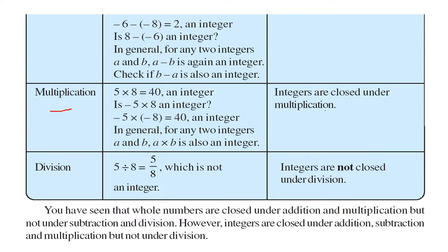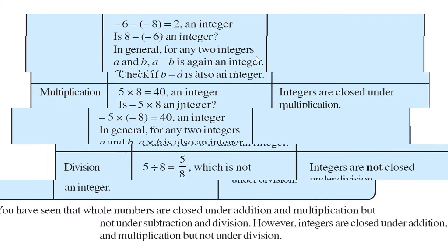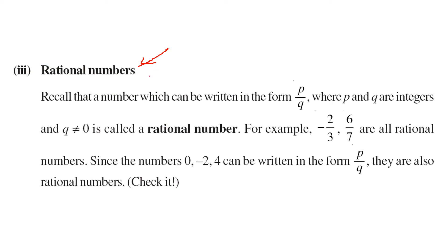When we multiply, again we get a number which is an integer — 5 into 8 is 40. If you multiply some negative numbers together you always get a number which is positive and it is an integer. So a into b is also an integer. But when we try to divide, like 5 divided by 8, where 5 and 8 are integers, you don't get an integer. So multiplication, addition, and subtraction in integer terms are closed, but for division it is not closed.